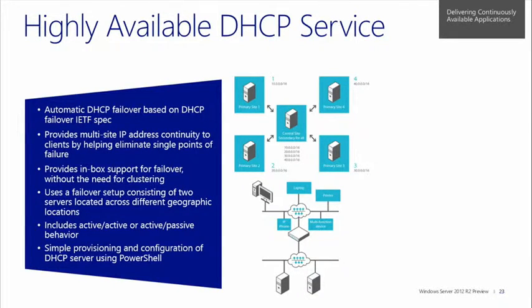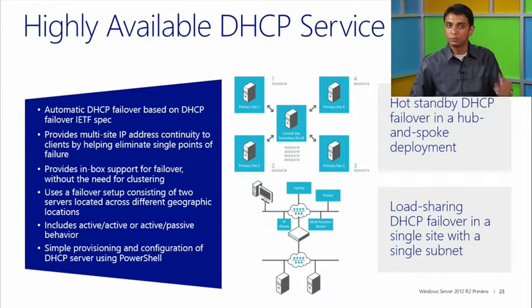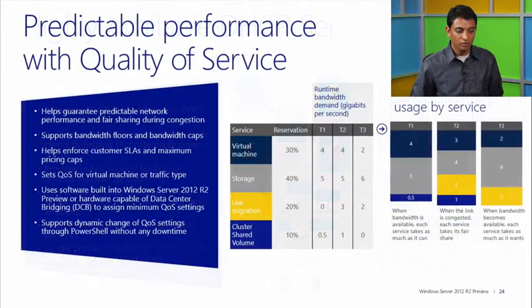Regarding DHCP servers and high availability — a lot of people still don't know this — the DHCP server is now highly available. In the past, you needed to cluster them together. With Windows Server 2012, you can have an active-passive DHCP server without clustering. You can configure it for hot standby, where if the primary DHCP server goes down the secondary automatically takes over, or configure load sharing mode where load is shared between two DHCP servers. Provisioning is simple via PowerShell.